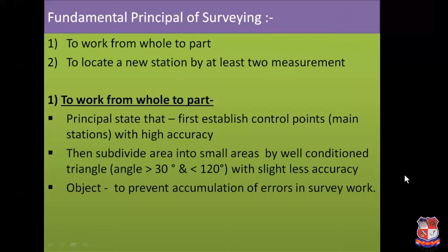Now, the fundamental principles of surveying — there are two principles. Number one: to work from whole to part. Number two: to locate a new station by at least two measurements. The first principle states that first establish the control points, that is, main stations, with high accuracy, and then divide the whole area into small areas by well-conditioned triangles — meaning all angles of the triangles have values more than 30 degrees and less than 120 degrees — with slightly less accuracy. The object of this principle is to prevent the accumulation of error in surveying work.